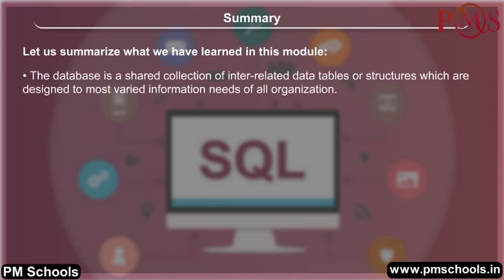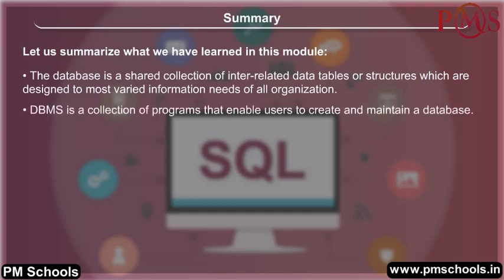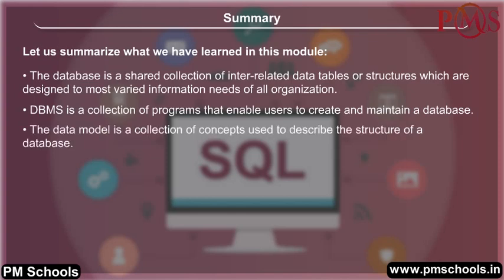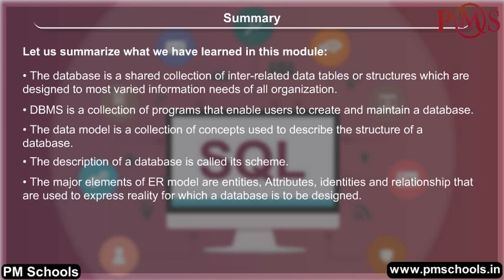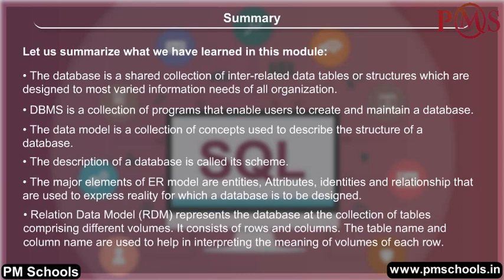Summary: A database is a shared collection of interrelated data tables designed to meet the varied information needs of an organization. DBMS is a collection of programs that enable users to create and maintain a database. The data model is a collection of concepts used to describe the structure of a database, and the description of a database is called its schema. The major elements of the ER model are entities, attributes, identities, and relationships used to express reality. The relational data model represents the database as a collection of tables with rows and columns, where the table name and column names help interpret the meaning of values in each row.